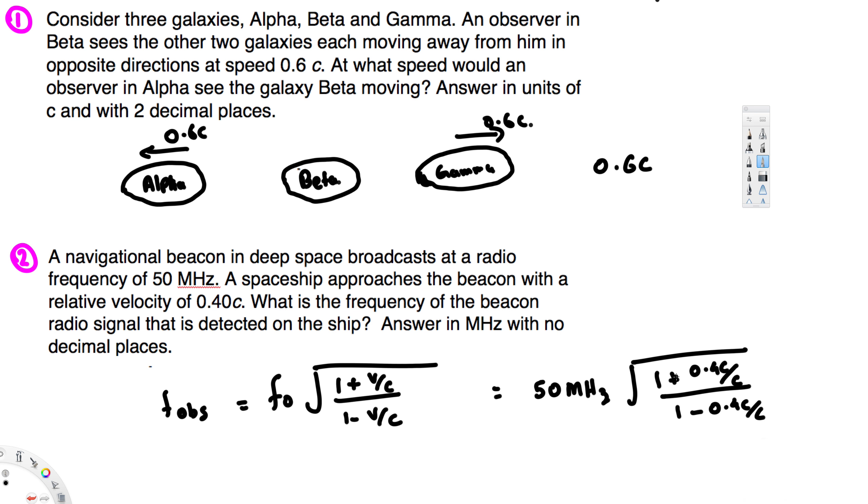So this is going to be 1.4 over 0.6. 50 megahertz times the square root of 1.4 over 0.6, and that's going to give us approximately 76 megahertz.